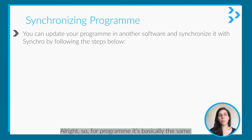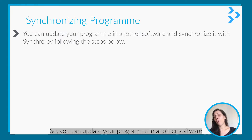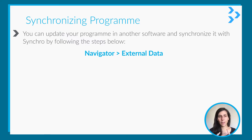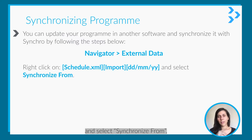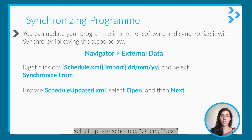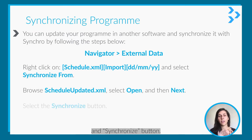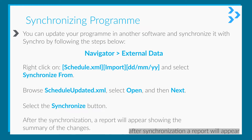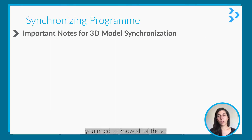This part is about synchronizing a program in Synchro. You can update your program in another software and synchronize it with Synchro using these steps: navigate to External Data, right-click on the schedule, select Synchronize From, select the updated schedule, click Open, then click the Synchronize button. After synchronization, a report will appear showing all the changes as a summary.